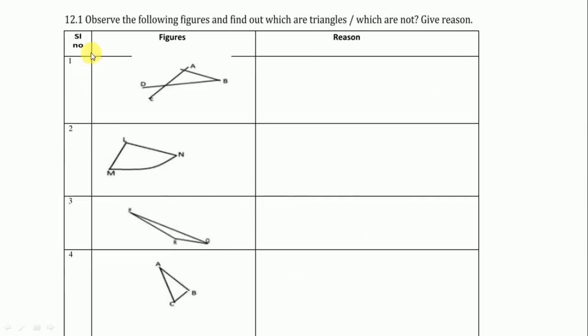12.1 is observe the following figures and find out which are triangles, which are not, give reason. So here first figure, see this one is triangle. So we write three line segments in the same plane meet at the end point and form a closed figure, so this is a triangle.